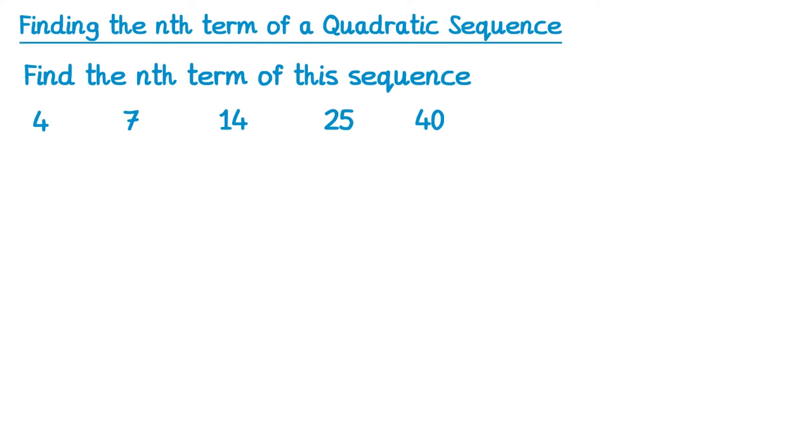Let's try a different example then. Let's start by finding the differences. To get from 4 to 7 we add 3, 7 to 14 is add 7, 14 to 25 add 11, and 25 to 40 add 15. This is the first difference, and it's not constant, so it's not a linear sequence.